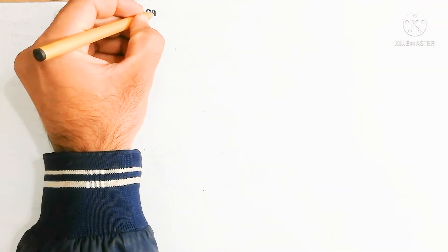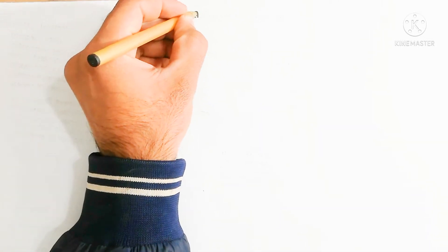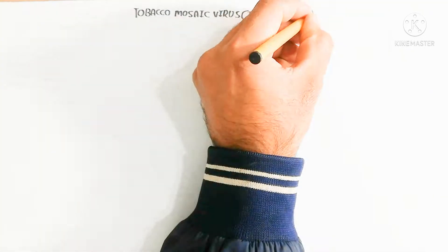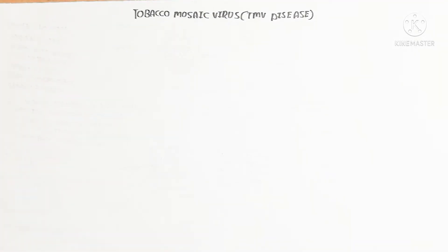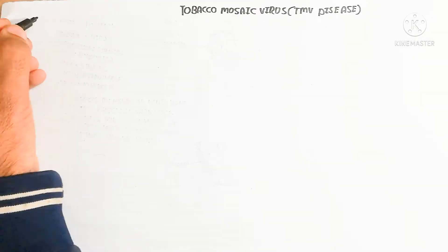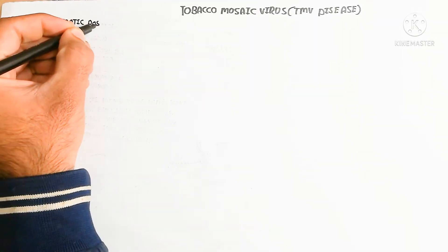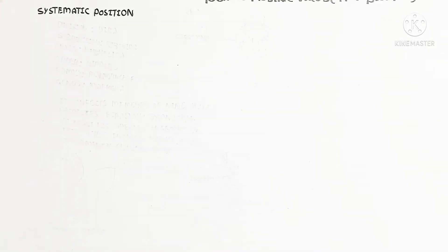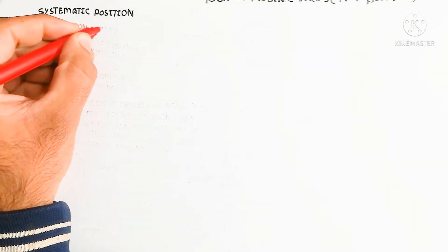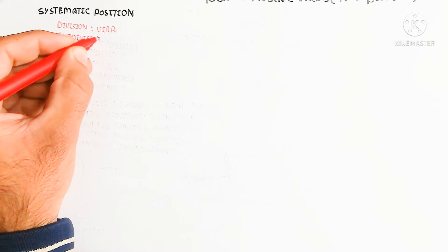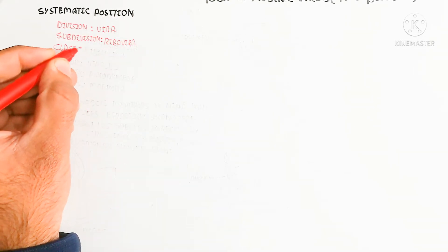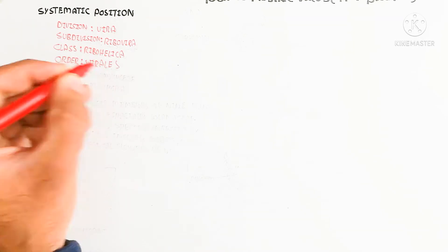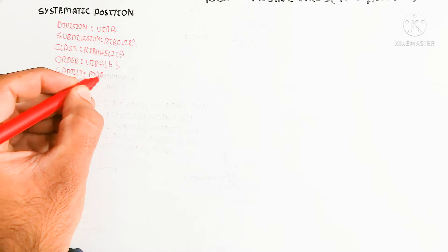In this video we will discuss about the Tobacco Mosaic Virus, also known as TMV. We will discuss the TMV causing disease in the tobacco plant or potato plant. First, let's understand the systemic position of this virus. The division is virus, and the subdivision is ribovirus because it contains ribonucleic acid. The class is Ribohelica, reflecting its helical structure. The order is virus, family Marmoviridae, and genus is Marmora.